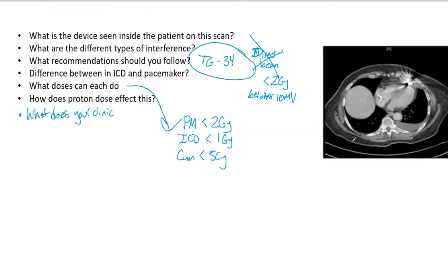Also, if you have in vivo dosimetry like diodes or MOSFETs, use those. Even if you're not treating anywhere close to the pacemaker, to be able to use that in vivo dosimetry and prove that this is not getting any dose, that is ideal.